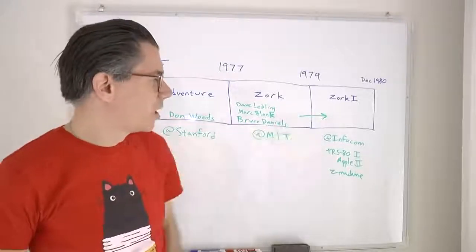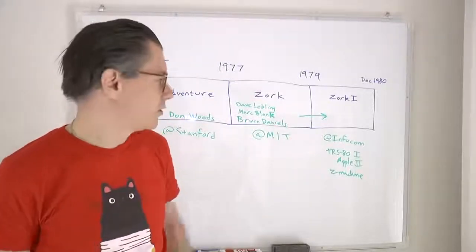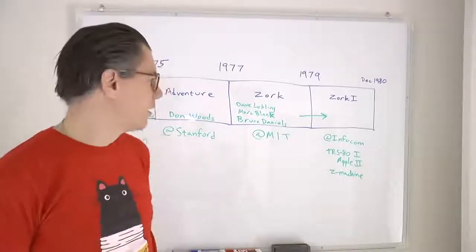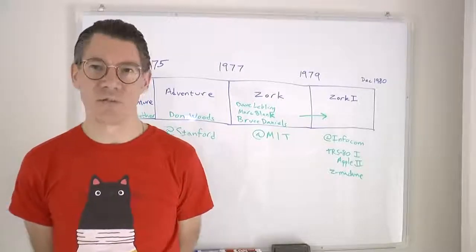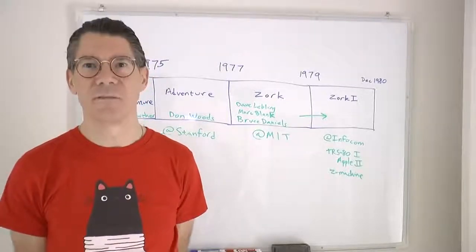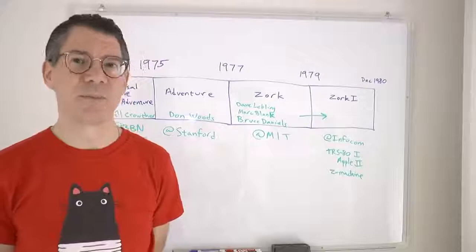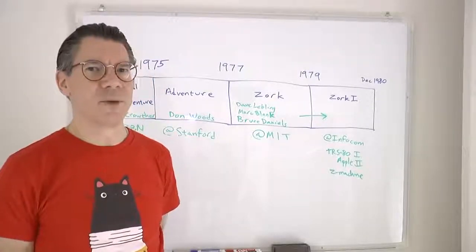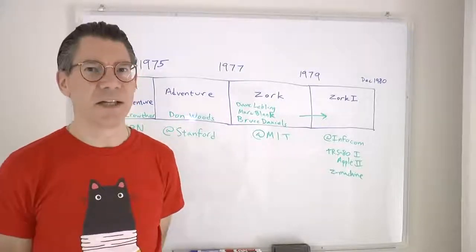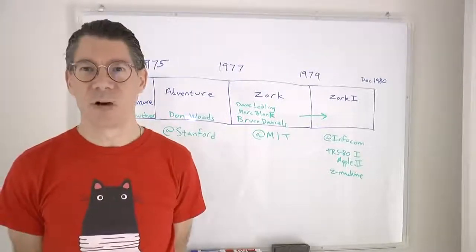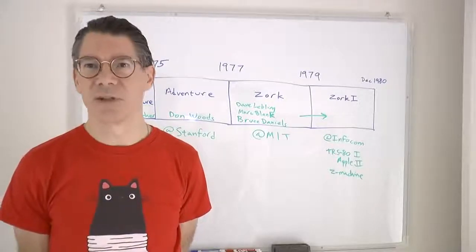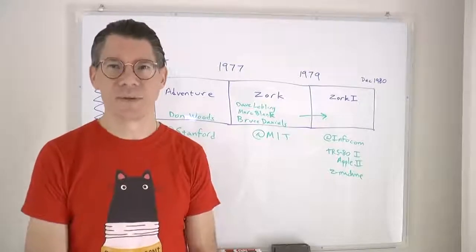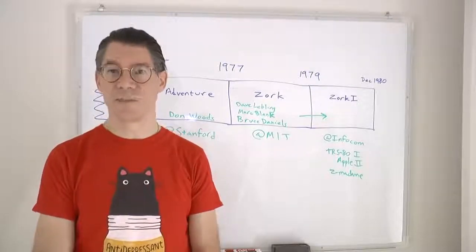The TRS-80 Model 1 did not run on a 6502 processor; the Apple II did. So they were thinking about how they could write the software to run on the very limited personal computers of the day, and they came up with the idea of a virtual machine. The program they wrote was called ZIP, which stood for Z-Machine Interpretation Program.